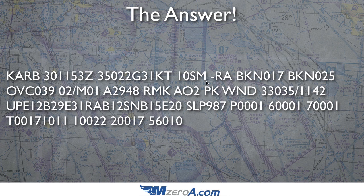10SM means 10 statute miles of visibility. A METAR only shows you out to 10 statute miles, so the visibility today may be 20 statute miles, but they're only going to show you out to 10 — and obviously they'll show you if it's well less than 10. The minus RA over here: the minus means light and RA means rain, so there is light rain at Ann Arbor, Michigan.